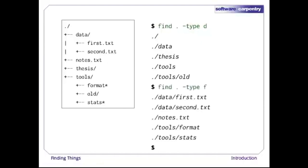If we change -type d to -type f, we get a listing of all the files instead. Find automatically goes into subdirectories, their subdirectories, and so on, to find everything that matches the pattern we've given it.